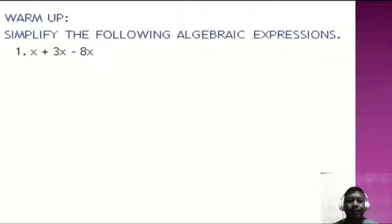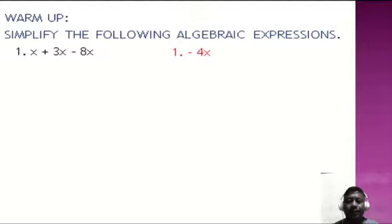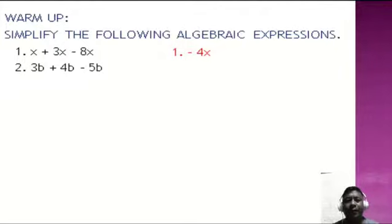Number one: x plus 3x minus 8x is simply equal to negative 4x. Number two: 3b plus 4b minus 5b — 3 plus 4 is 7, minus 5 is 2 — so we have 2b.